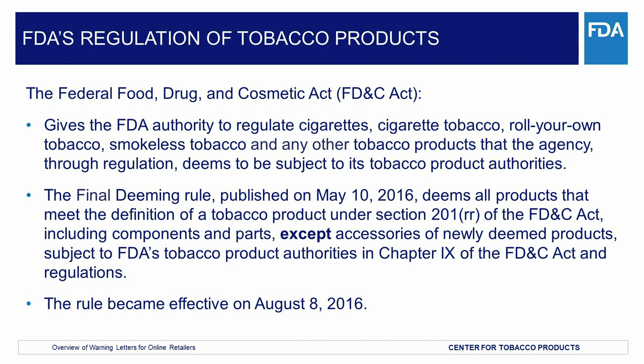The FD&C Act defines tobacco products, in part, as any product made or derived from tobacco that is intended for human consumption, as well as any component, part, or accessory of a tobacco product. The final deeming rule was published and became effective on August 8, 2016. FDA's regulatory authority covers all products that meet the definition of a tobacco product, including components and parts, but excluding accessories of those newly regulated tobacco products. The deeming rule extends FDA's tobacco product authorities under Chapter 9 of the FD&C Act, referred to as the Automatic Provisions in the Rule, to all newly deemed tobacco products, as well as setting out regulations for such products.